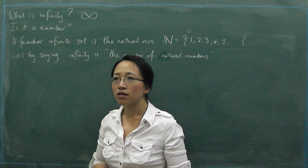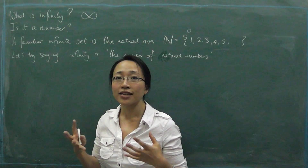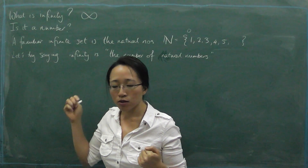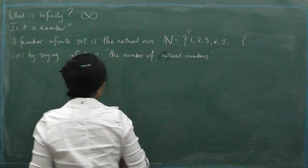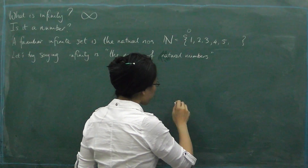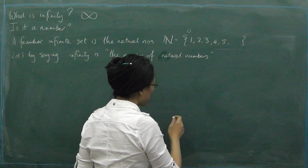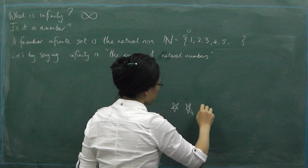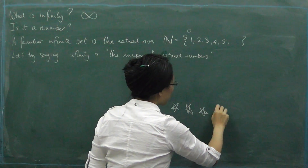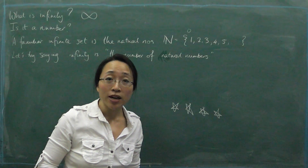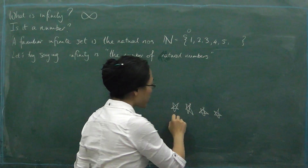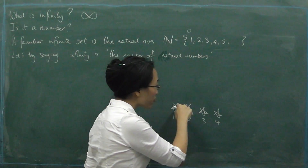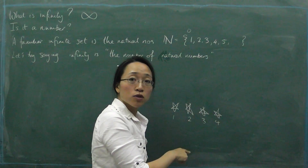Let's think about having an infinity of things corresponding to the natural numbers. If you've got four stars, the reason we know we've got four of them is that we can count them — one, two, three, four — matching them up to the numbers one through four. That means there's four of them.